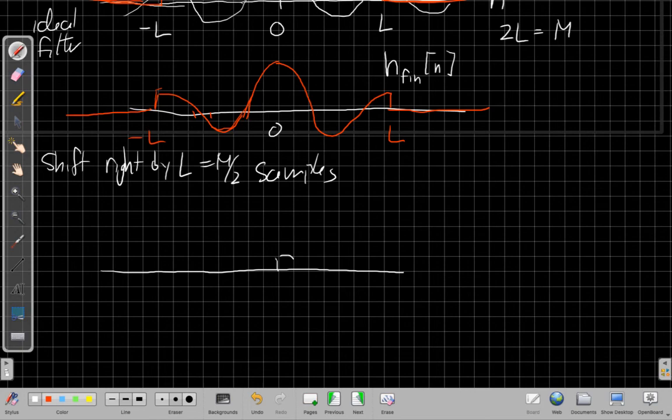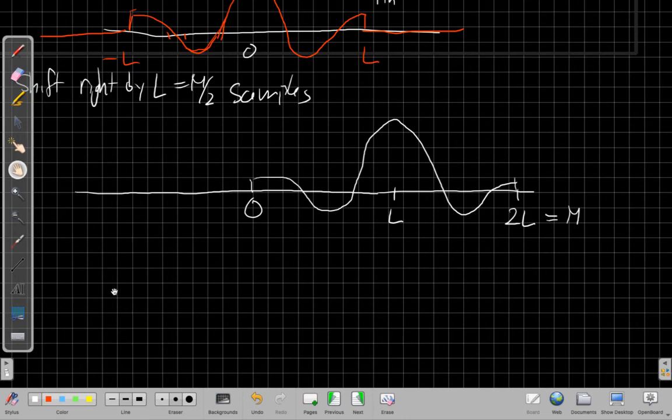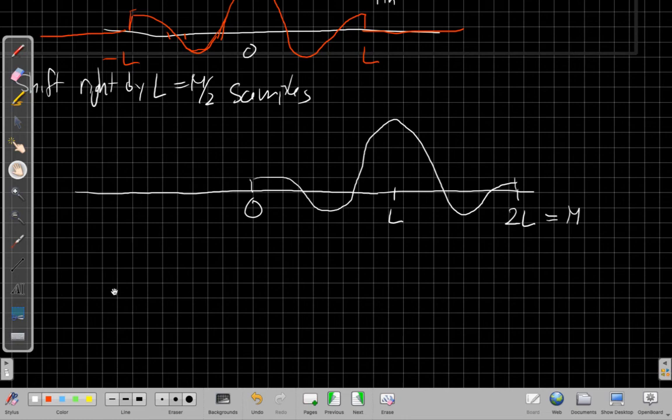So now by truncating it I now have this finite length thing we could say maybe we could say that this is, we'll call this h sub fin for finite of n. So this is the one that goes from minus l to l and everywhere else is zero. And then the second step is that we make it causal. We say, well, if I took this thing now and shifted it l points to the right it would become causal. So we're going to shift right by l which is m over 2 samples. And when we do that it will look basically the same but just at a different time index.